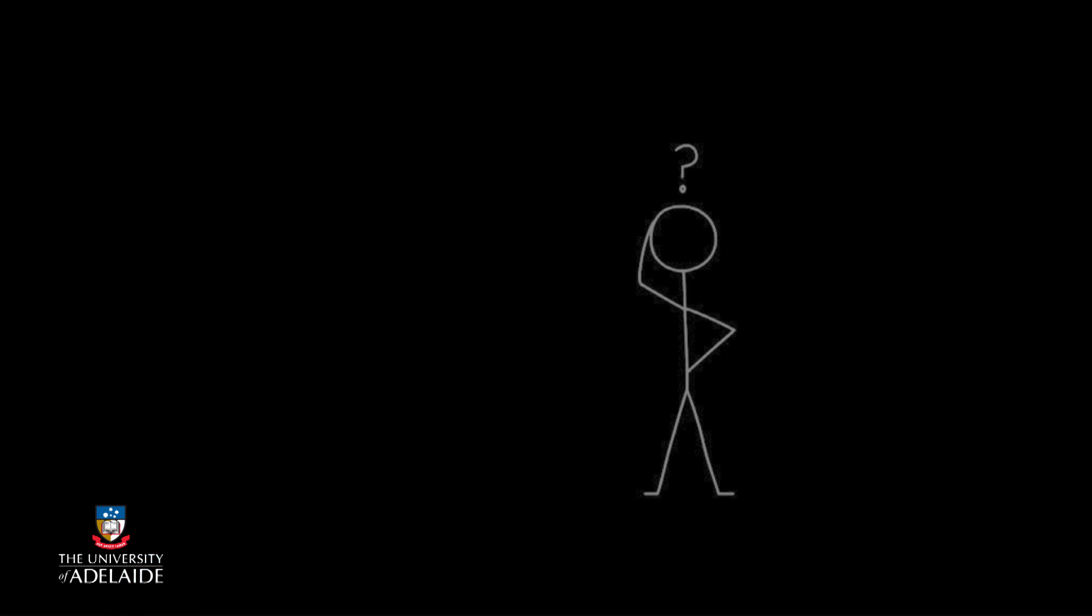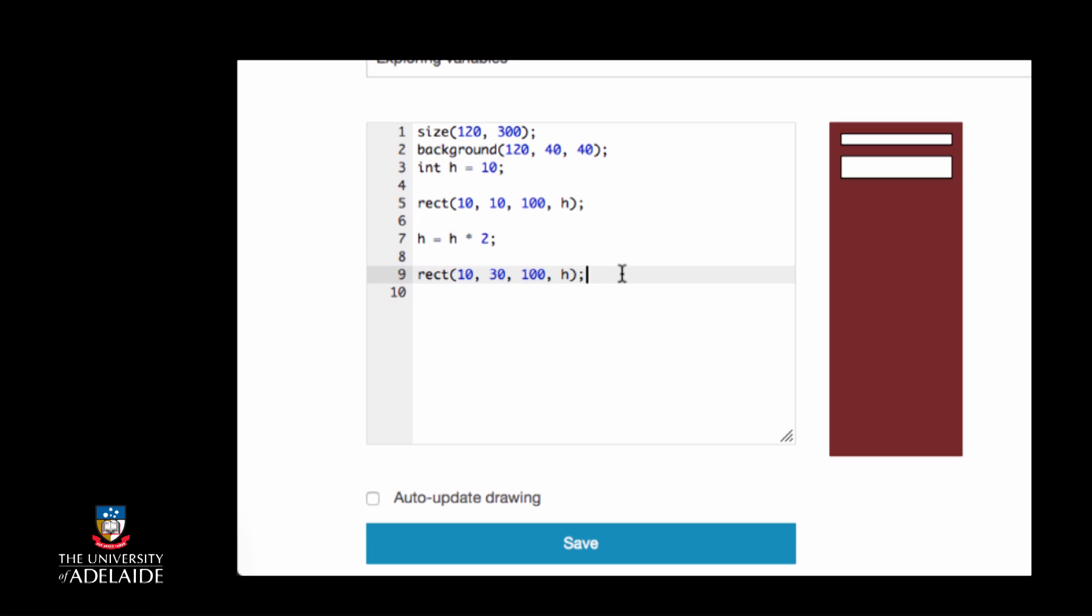We can then execute the same instructions again. What would the value of h be now? We go through the same process, first calculating the value of the expression to the right of the equal sign. In this case, we read the current value of h, now 20, and multiply it by 2. This gives us the value 40. We then update the value of the variable h to now be 40.